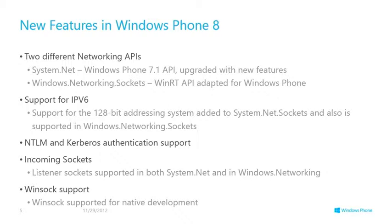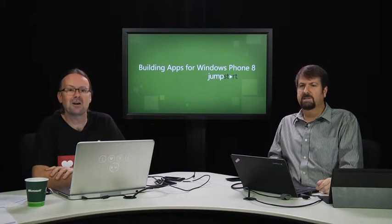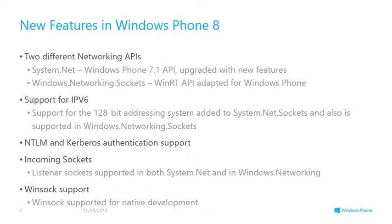A lot of this comes from the benefits of having the shared core with Windows 8, because support for things like IPv6 is at a low level of the OS — shared modules we're taking advantage of. We're happy to ride on the coattails of big Windows and get IPv6 plus listener sockets for free.